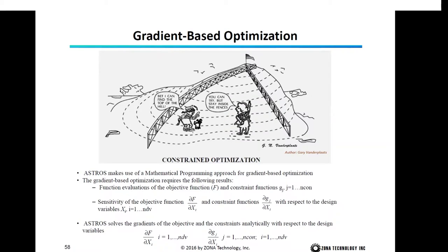Testing to find the slope is actually performing sensitivity analysis. After finding the direction, I can take a step up — this is called a one-dimensional search. I repeat this process until I hit the fence, meaning I hit a constraint function. I then calculate the sensitivity of the constraint function in order to stay away from it, while finding another direction to climb up. By repeating this process, I finally reach the optimum point.